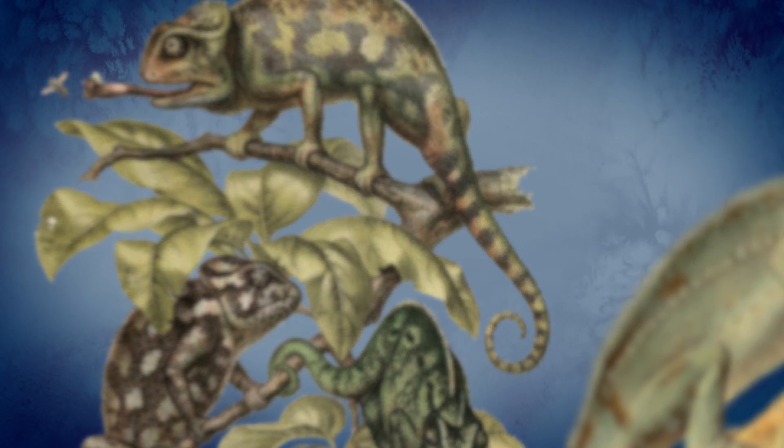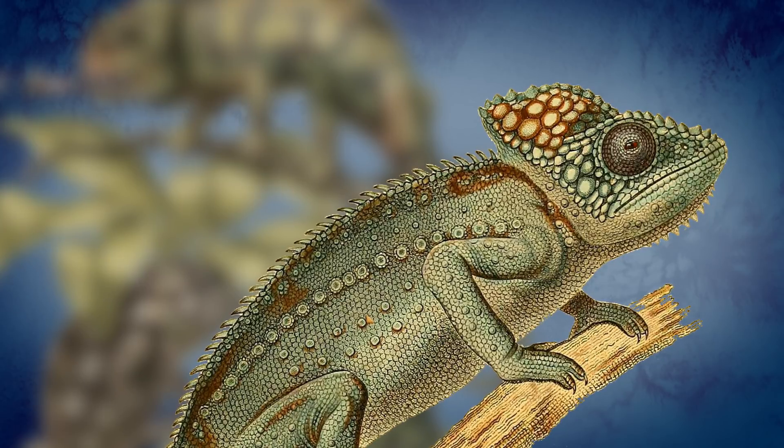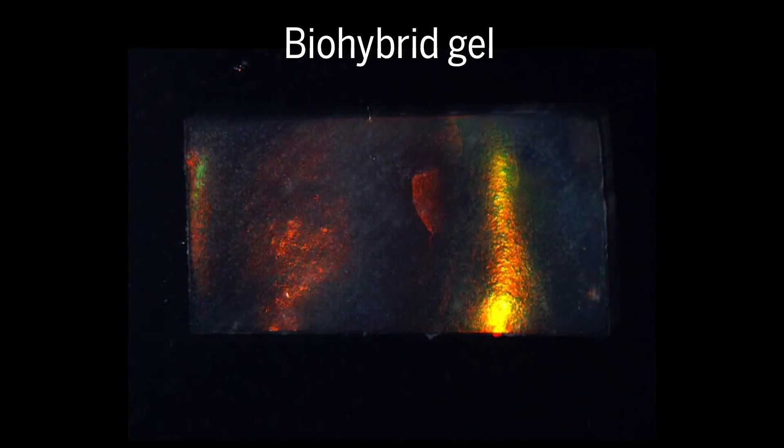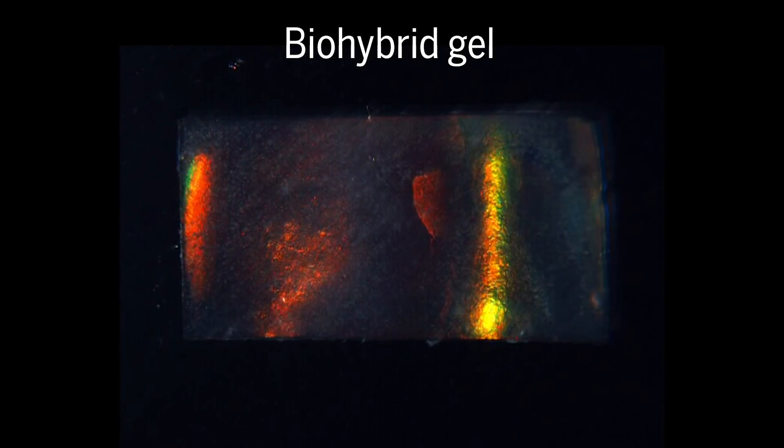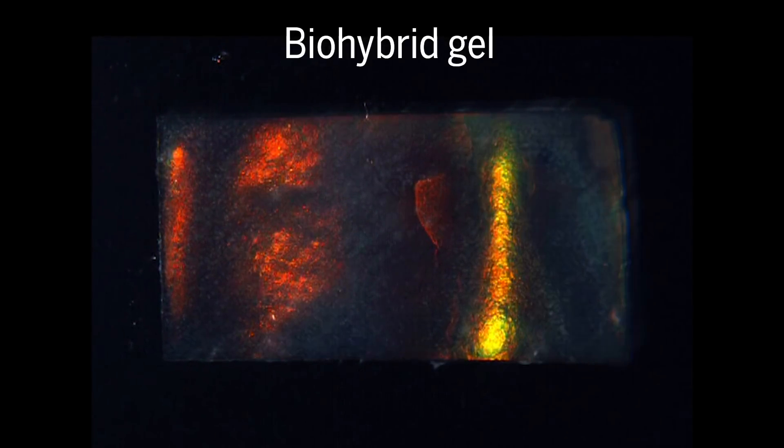Inspired by an organism that uses structural color, the chameleon, researchers have created a biohybrid, a color-changing gel embedded with living heart cells, that can display and control structural color on its own.